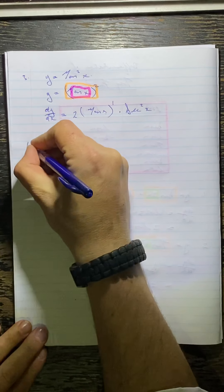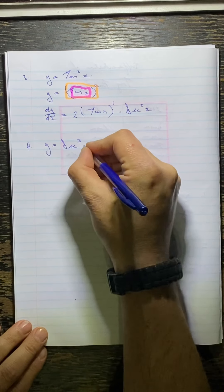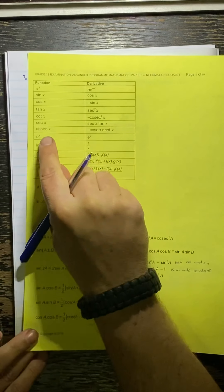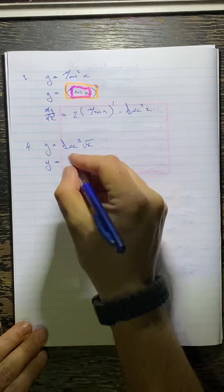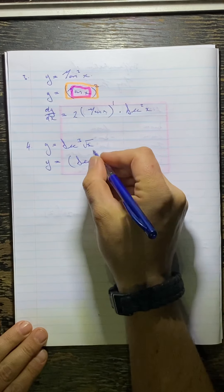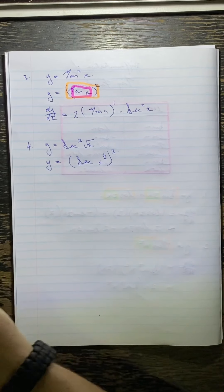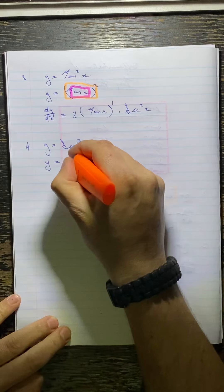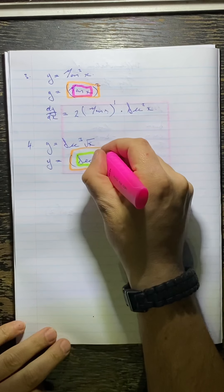Looking at example 4: y is equal to sec³(√x). Very similar to what I did before — we don't know the derivative of sec cubed, only sec. So I'm going to rewrite this: y = (sec(x^(1/2)))³. With this one, we have a function within a function within a function. The outside function is the cubed part, the inside function is sec, and then we have x to the half.